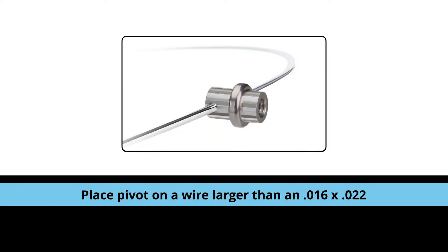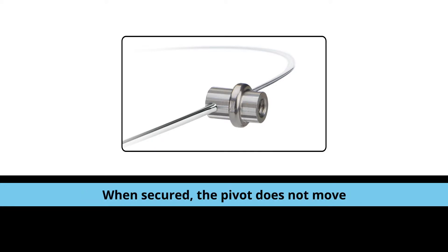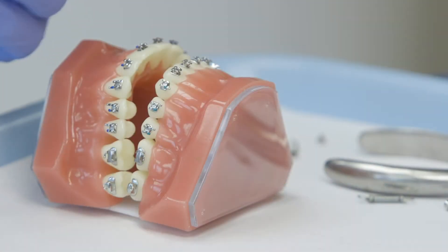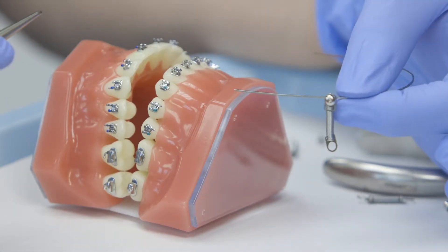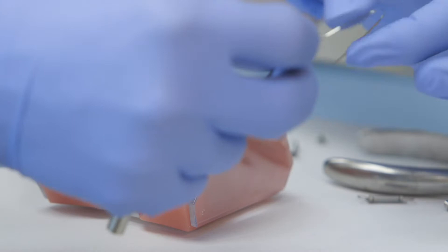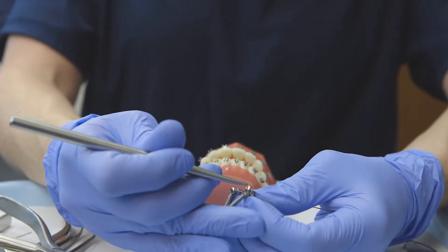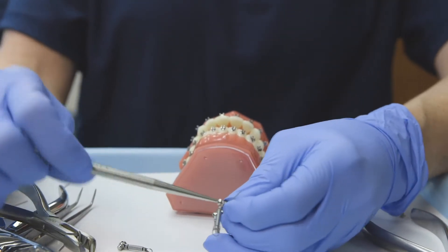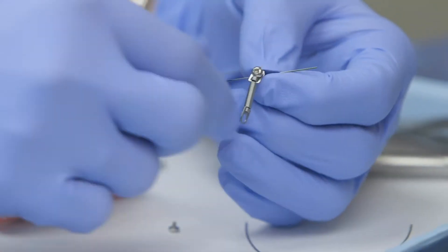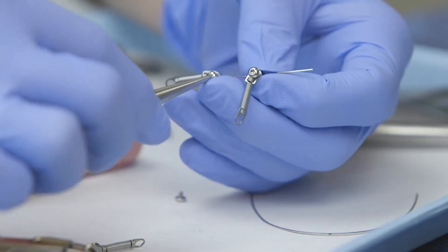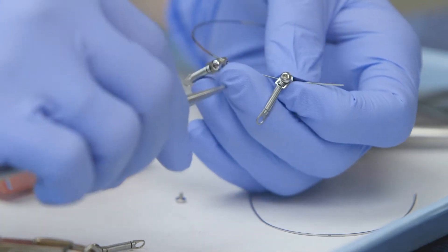Place the traditional pivot on a wire larger than an 016 by 022. When you secure the pivot with the screw, you will see that the pivot now does not move. To place the system in the mouth, the best way is to start by assembling the pivot, spring, and screw combination outside of the mouth. For Class 3 placement, slide the pivot onto the upper arch wire and place the eyelet of the spring over the pivot, and secure it in place with the screw using the Allen pencil provided in your kit.